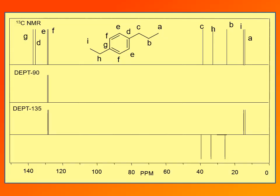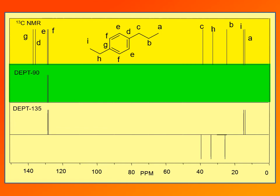Here is an example of a DEPT experiment using the same compound as before — para-ethylpropylbenzene. The DEPT experiment can easily determine the number of attached protons on each carbon. First, the regular carbon-13 NMR spectrum gives one signal for each different type of carbon, telling us how many different carbon types are present. Next, DEPT-90 tells us which carbons have only one hydrogen attached — only CH carbons appear — and we can see that signals E and F are CH carbons, while the rest are not.